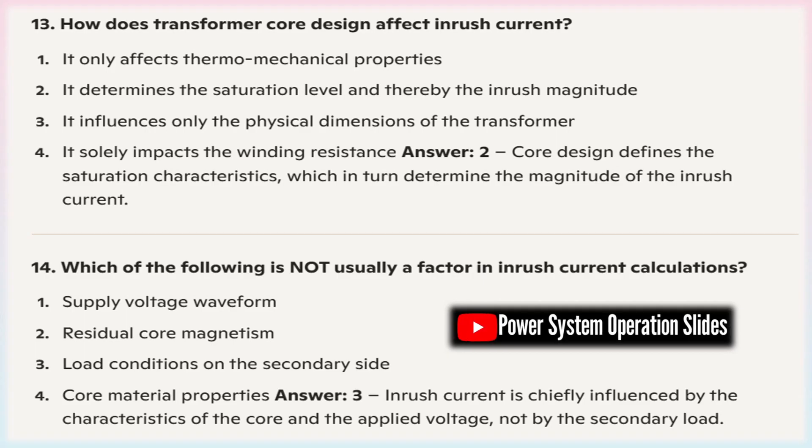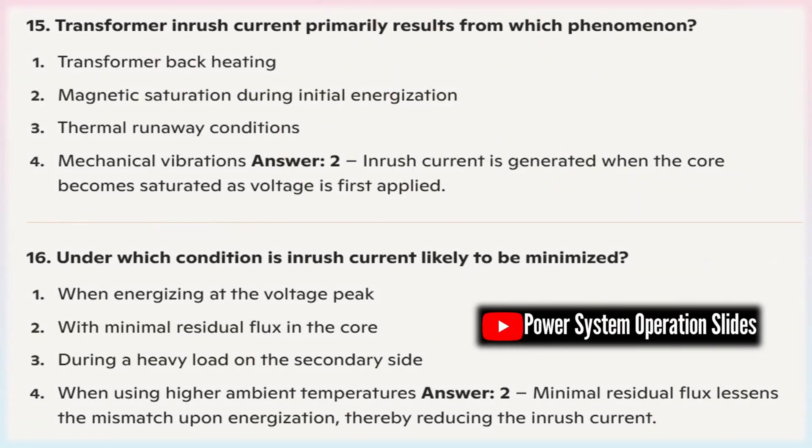Multiple winding taps: Transformers can be designed with multiple winding taps on the primary side. By connecting the transformer to a tap with a higher voltage ratio during startup, the flux in the core can be built up more gradually, reducing the inrush current.